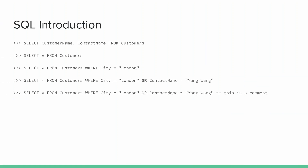Here's a quick introduction to SQL. We can use the SELECT keyword, specify a couple of fields separated by a comma, and then use the FROM keyword followed by a table name. For example: SELECT customer_name and contact_name FROM customers. We can also SELECT star, which means every field from customers.